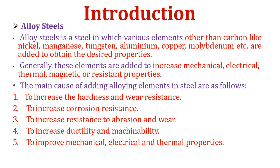Generally these elements are added to increase mechanical, electrical, thermal, magnetic or resistance properties. The main causes of adding alloy elements in steel are as follows. First, to increase the hardness and wear resistance characteristics. Generally, tools are made from high carbon type of steel, but that high carbon only builds the hardness and we also require wear resistance characteristics. At that time we add different alloy elements like tungsten, molybdenum, vanadium, and chromium, which build both hardness and wear resistance.